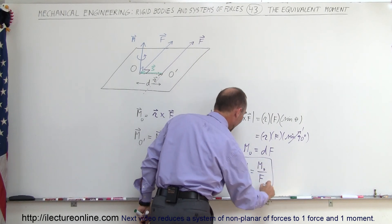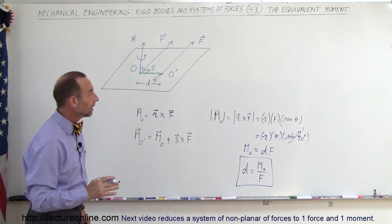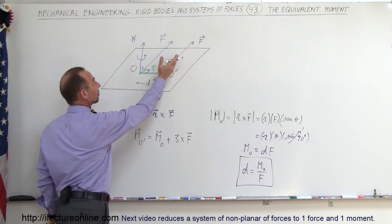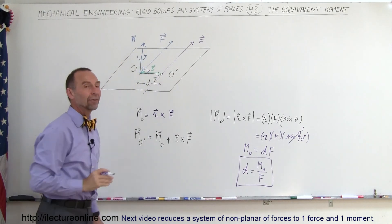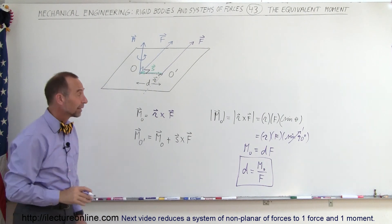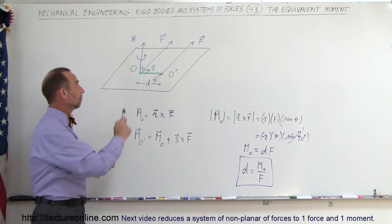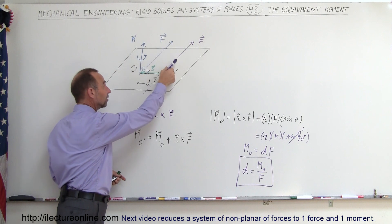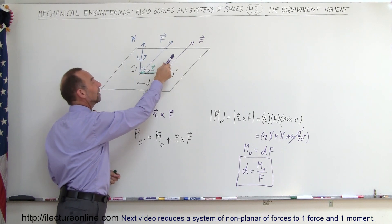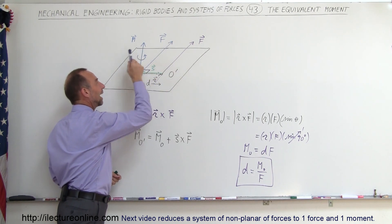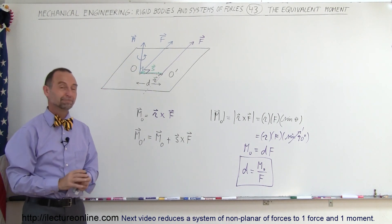That means you have to move the force a distance equivalent to the ratio of the moment at O divided by the magnitude of the force. That is how we find how far you have to move the force laterally to have the same effect — the same moment caused by this force as the moment represented at point O. That's how we can replace a force and a moment with a single force that has the same effect as the moment at point O.